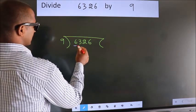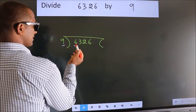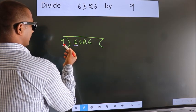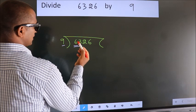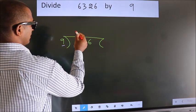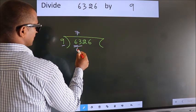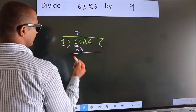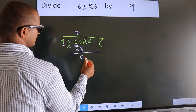Here we have 6. Here 9. 6 is smaller than 9, so we should take 2 numbers: 63. When do we get 63 in the 9 table? 9 times 7 is 63. Now we should subtract. We get 0.